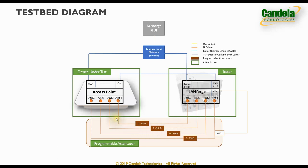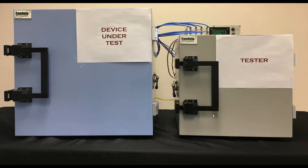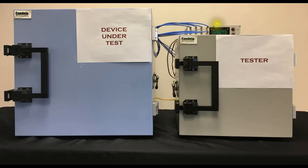The programmable attenuator simulates distance between the AP and the stations, enabling important tests like performance over distance, receiver sensitivity, and roaming. Here is a picture of the physical test setup: one chamber on the left contains the device under test and the other on the right contains the tester. These two are connected on the ethernet side using ethernet cables and on the wireless side using RF cables, which go through the programmable attenuator unit visible on the top.